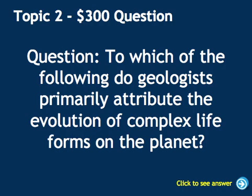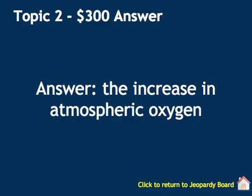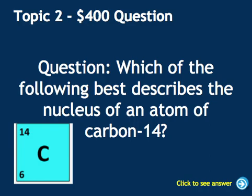To which of the following do geologists primarily attribute the evolution of complex life forms on the planet? The answer is the increase in atmospheric oxygen. I've put a picture of carbon here for reference. Which of the following best describes the nucleus of an atom of carbon-14? The atomic mass is 14 and the atomic number is 6 — the atomic number is the number of protons. 14 minus 6 is 8, so there are 8 neutrons.